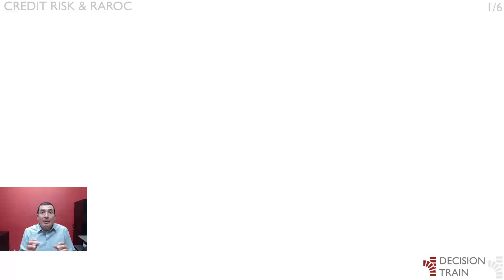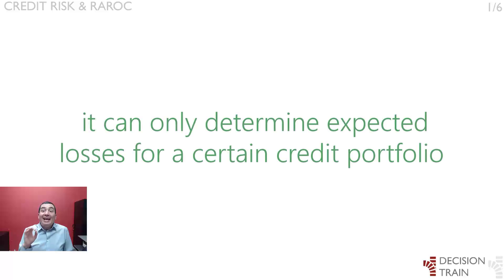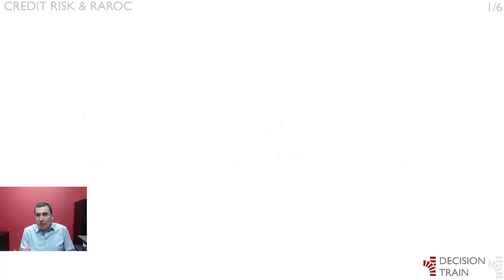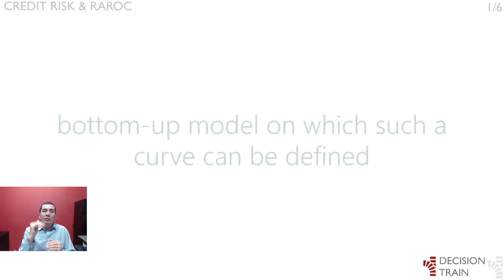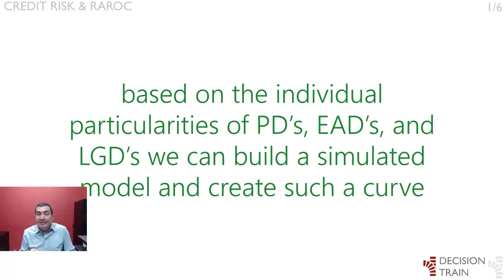The expected loss in currency amounts can then be written as: EL = PD × EAD × LGD. The major limitation of this function is that it can only determine expected or mean losses for a certain credit portfolio. Without knowing the exact shape of its density curve, it is impossible to determine the unexpected loss at a certain confidence level, thus its value at risk. That is why we propose here a methodology to construct a bottom-up model on which such a curve can be defined based on the individual behavior of each asset in the portfolio. Based on the individual particularities of PDs, EADs, and LGDs of each loan, we can build a simulated model and create such a curve, making it possible to determine the magnitude of expected and unexpected losses for a bank portfolio.